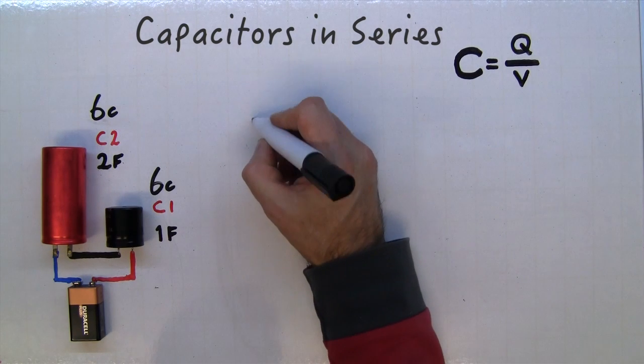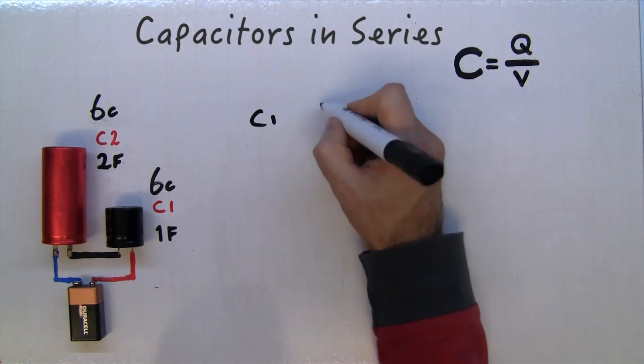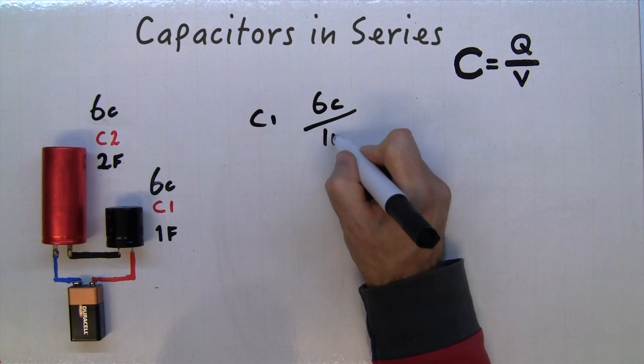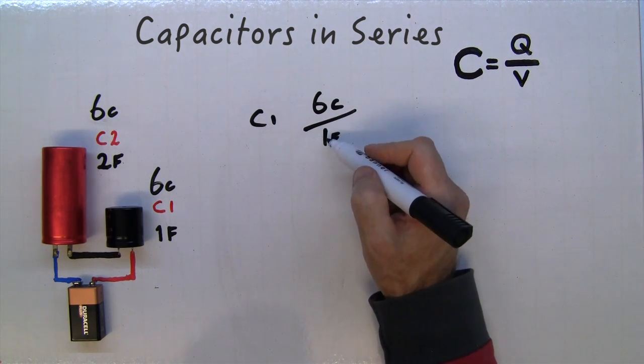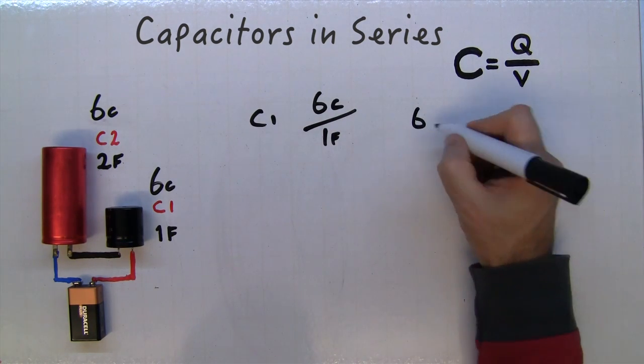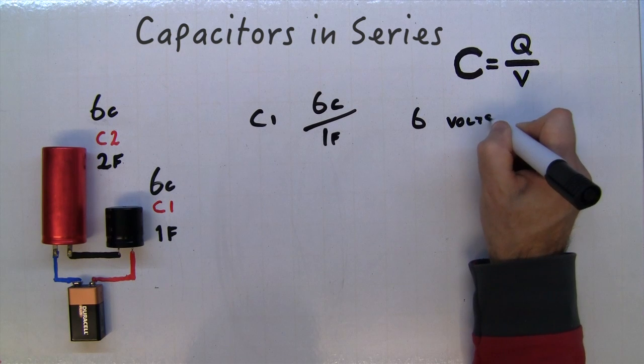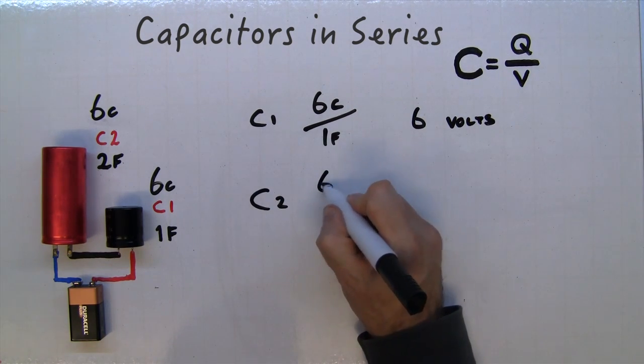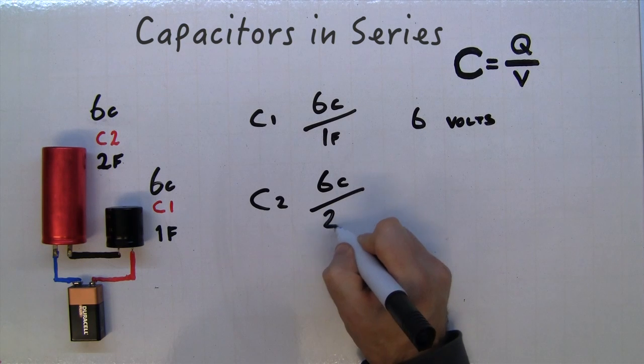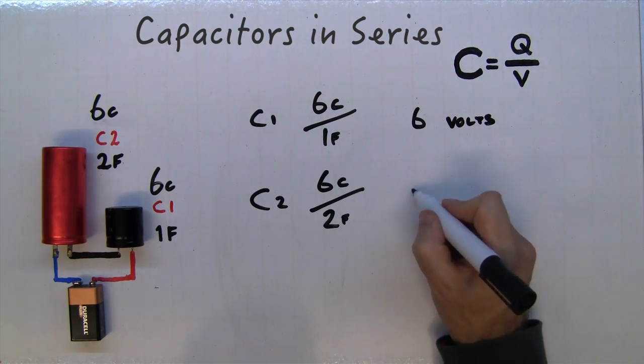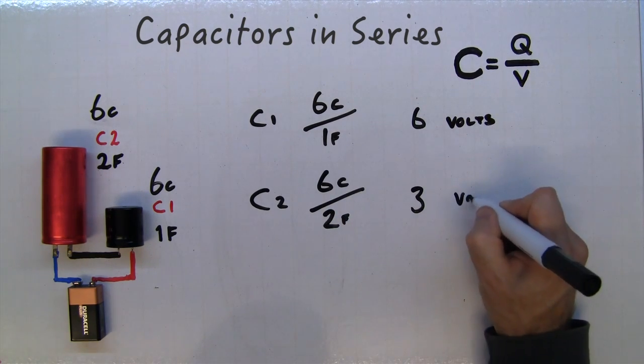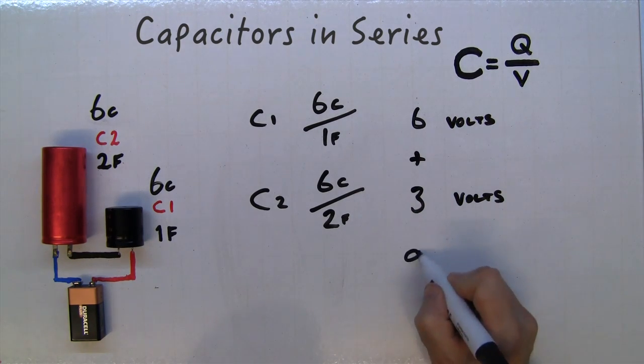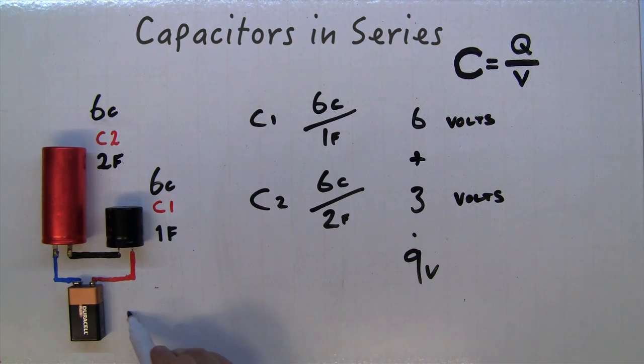So capacitor one, that's six coulombs over one farad. Six over one is six, so that's six volts. Capacitor two is six coulombs over two farads. Six over two is three, so that's three volts. Six plus three equals nine volts.